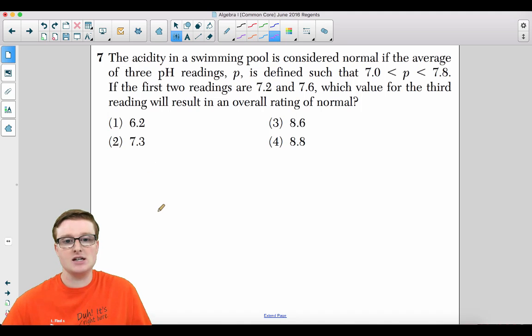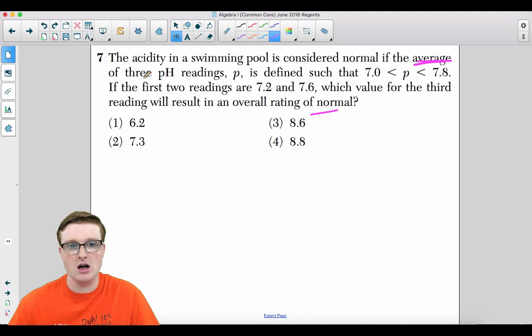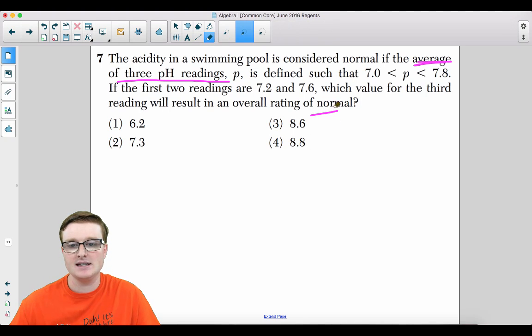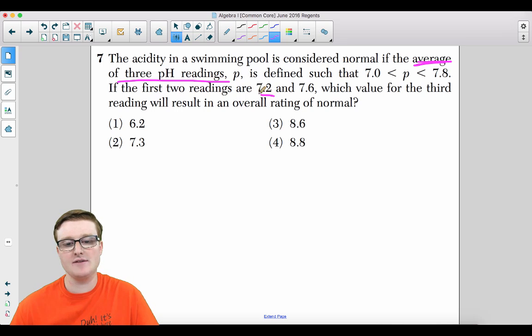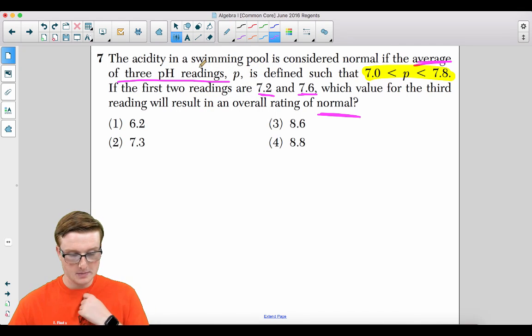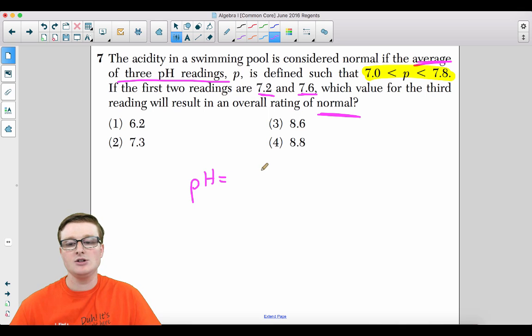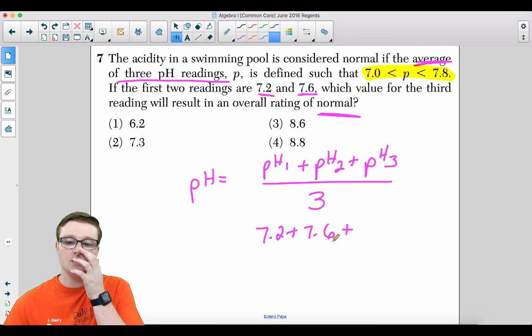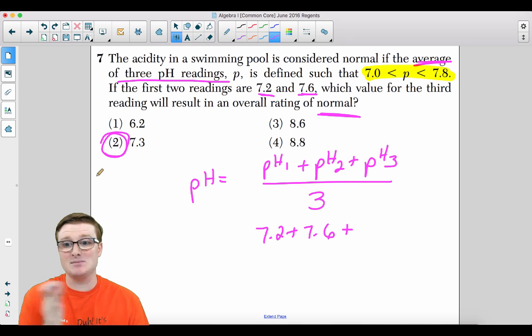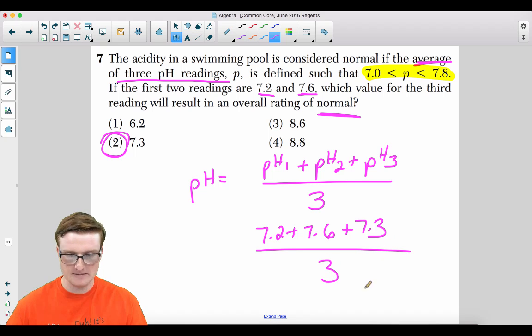Number seven, the acidity in a swimming pool is considered normal if the average of the three pH readings P is defined such that seven is less than P, which is less than 7.8. In other words, your pH values lie between seven and 7.8. If the first two readings are 7.2 and 7.6, which value for the third reading would result in an overall rating of normal? Ladies and gentlemen, this is a normal rating for pH between seven and 7.8. So your pH value is the first number plus the second number plus the third number divided by three.